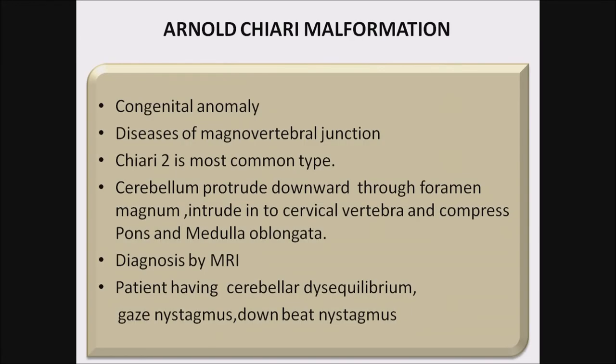Arnold-Chiari malformation — the most common congenital anomaly of the craniovertebral junction. Chiari type 2 is the most common type. The cerebellum protrudes downward through the foramen magnum, intrudes into the cervical vertebra, and compresses the pons and medulla. Diagnosis is only by MRI. Patients present with cerebellar disequilibrium, gaze nystagmus, and downbeating nystagmus — the most common finding in Arnold-Chiari malformation.